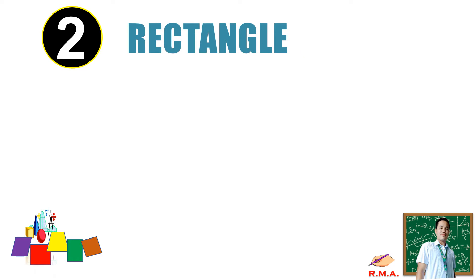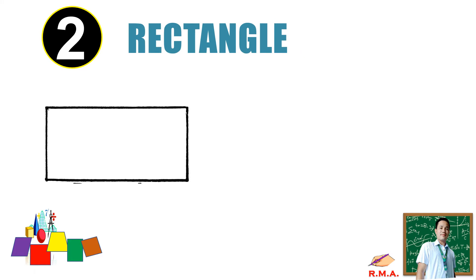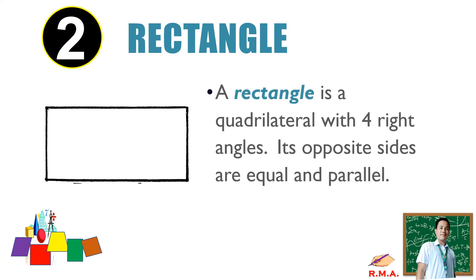The second one is the rectangle. A rectangle is a quadrilateral with four right angles. Its opposite sides are equal and parallel.